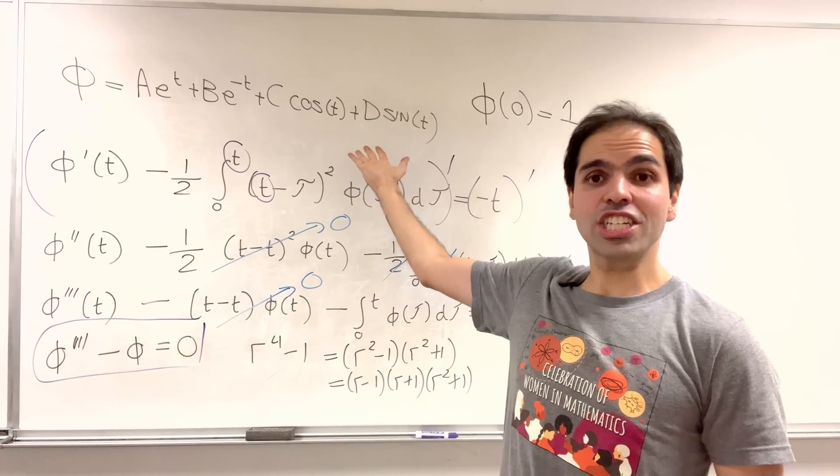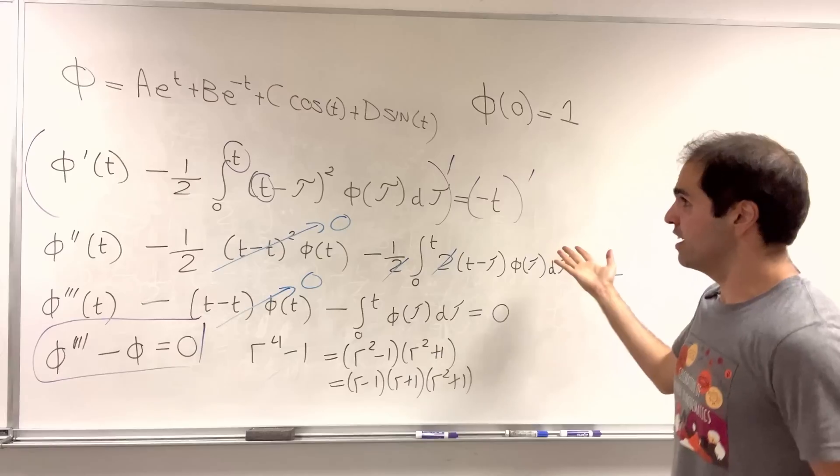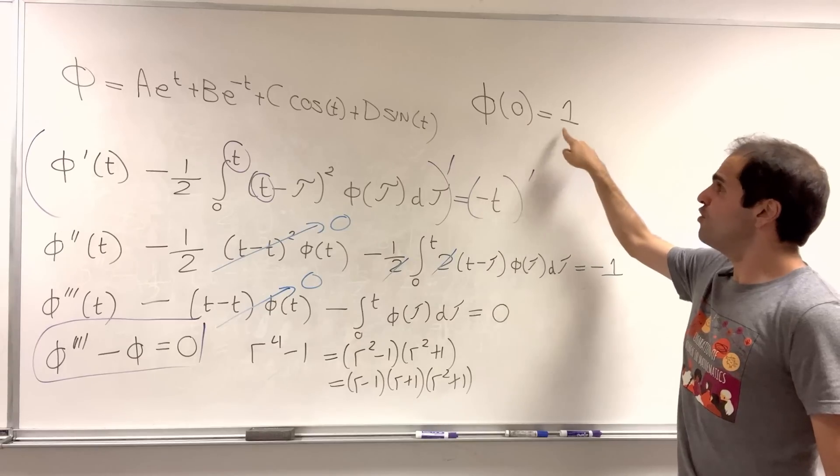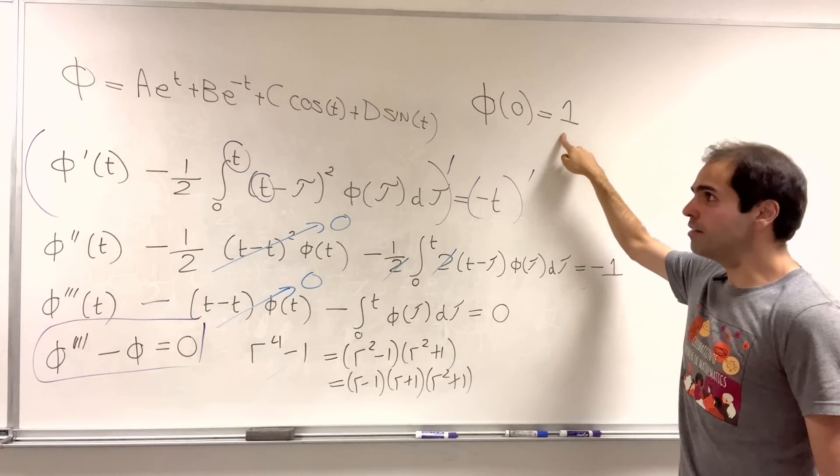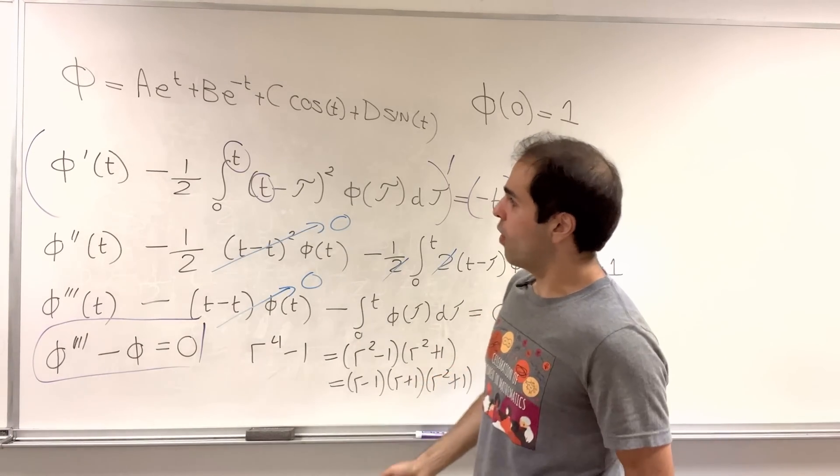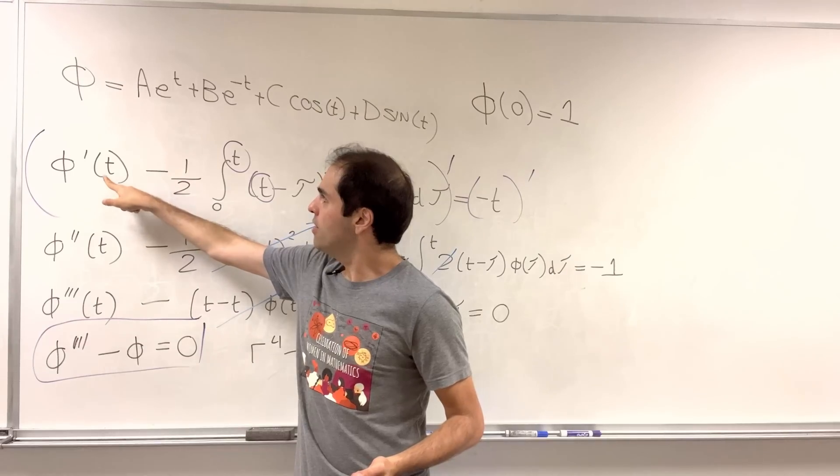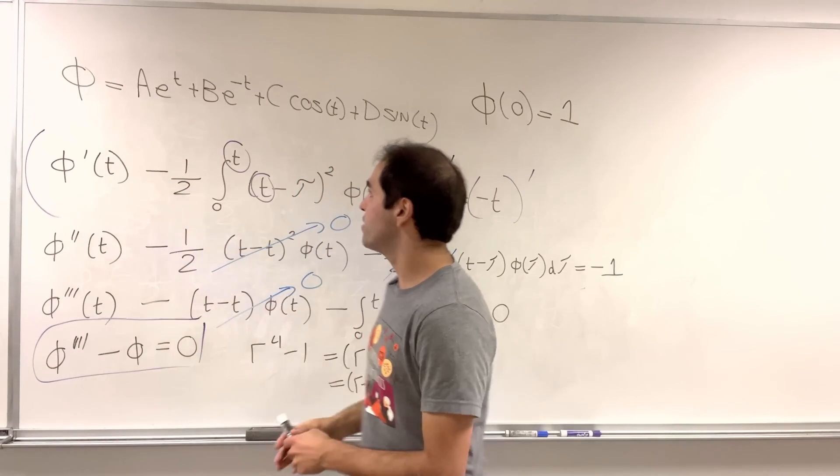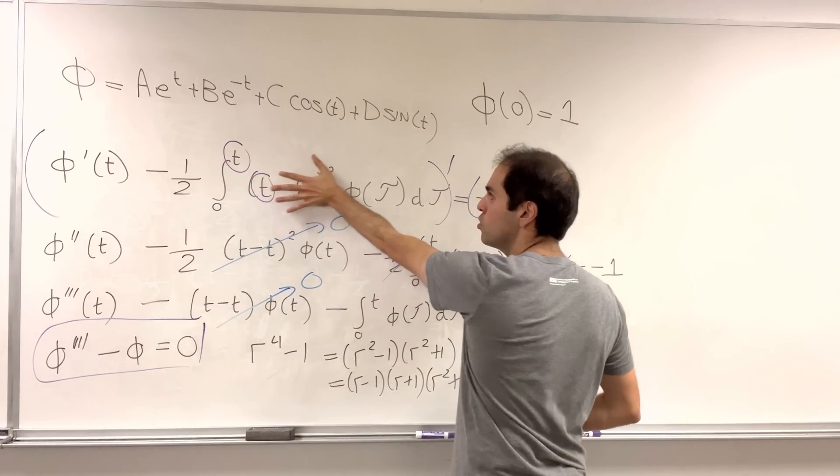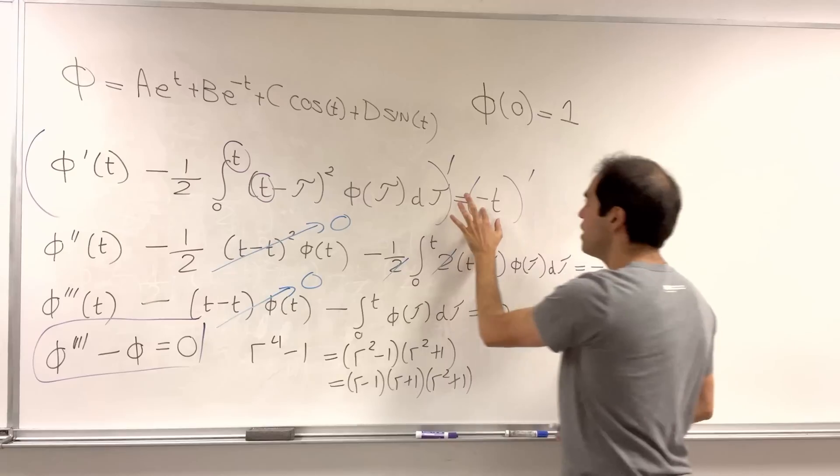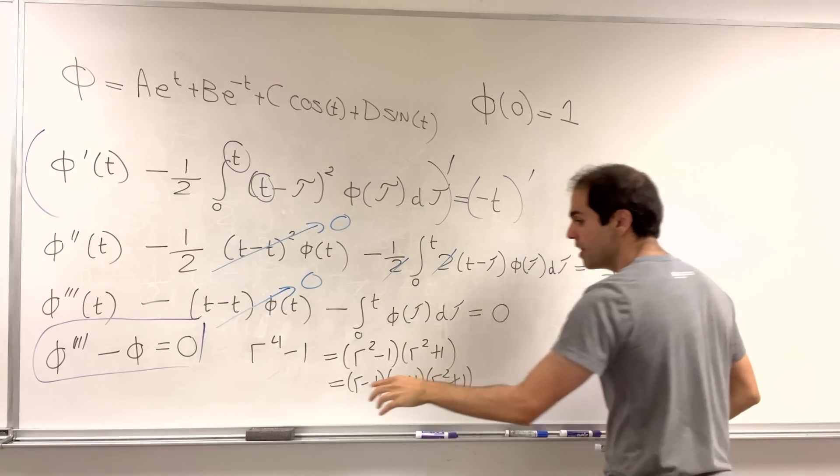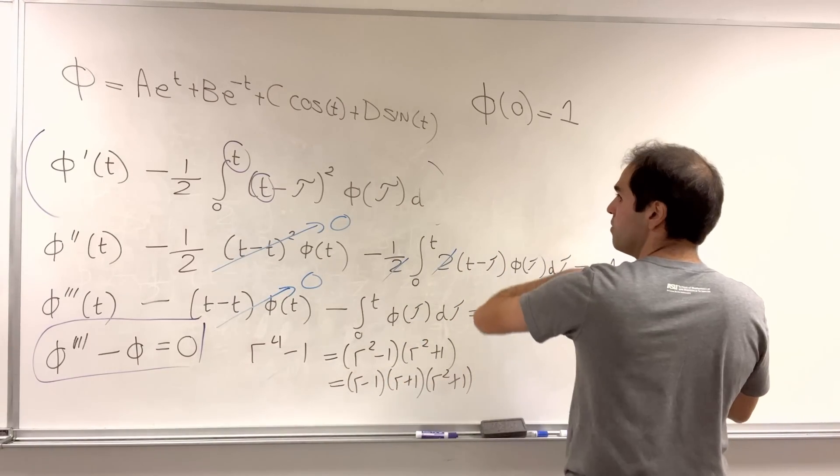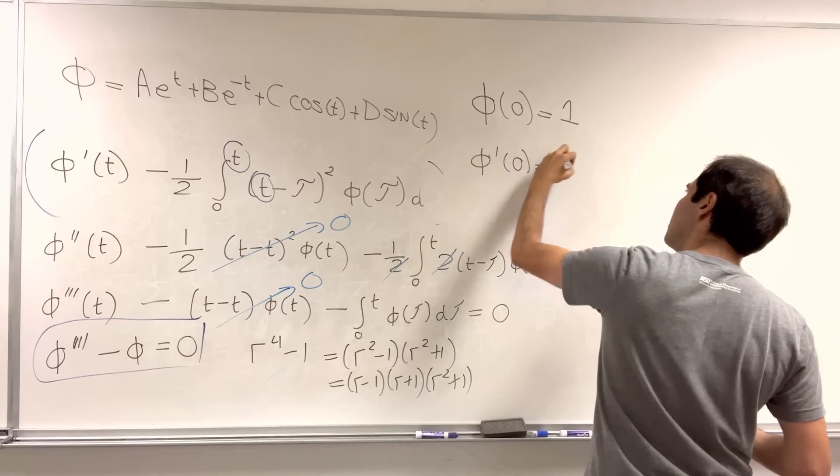But, the question is, which is it? And, for this, we need the initial conditions. So, we know phi of zero equals one. What about phi prime? Well, if you plug t equals zero in this equation, we get phi prime of zero minus integral from zero to zero, which is zero, equals minus zero, which is zero. And, so, the initial velocity is zero.